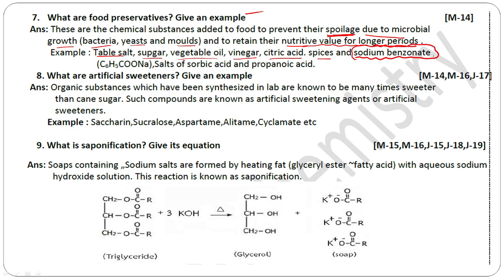Sodium benzoate, salts of sorbic acid, and propanoic acid are all food preservatives. What are artificial sweeteners? Give an example. These are organic substances synthesized in the laboratory that are many times sweeter than cane sugar. Such compounds are known as artificial sweetening agents or artificial sweeteners.